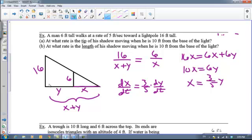So now we can do our derivative again. So DXDT is equal to 3 fifths times DYDT. And again, DYDT is given to me in the problem as he's walking away at 5 feet per second. That's this Y prime. So DXDT, now my X is the length of the shadow, is equal to 3 fifths times 5, which works out to be 3. So it's 3 feet per second.